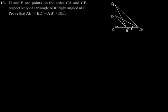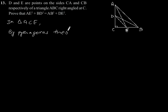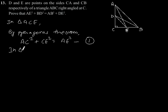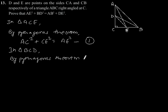Let us consider this figure which is according to the information given in the question. Considering triangle ACE and applying Pythagoras theorem — by Pythagoras theorem, AC square plus CE square is equal to AE square. Let's say this is equation 1.